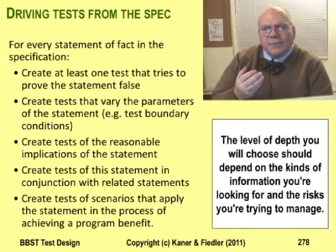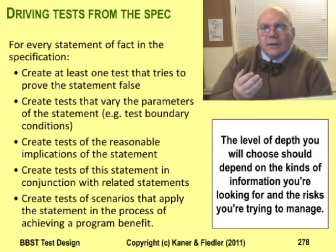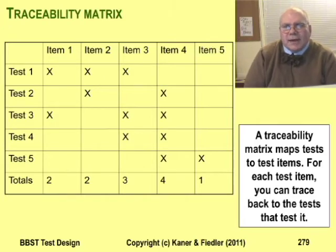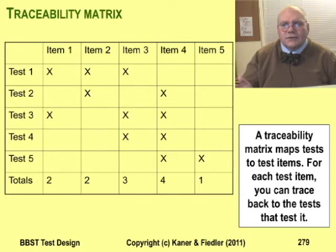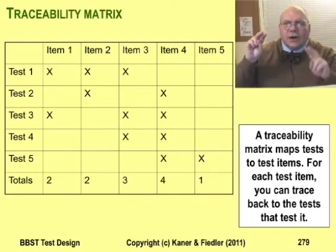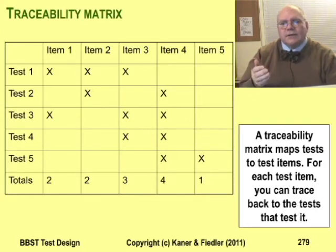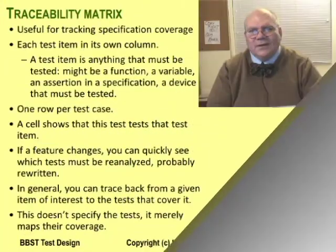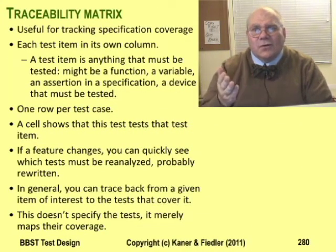For example, what happens if you test with boundary conditions? What happens if you have tasks that approximate real-life complexity — how people have really used the product? Will the spec statement still be true under those circumstances? A traceability matrix is a common tool for tracking spec-based tests. You can use a traceability matrix to map tests to anything, so it's more general than a spec-based test chart. Each item would be a different specification statement — so test one tests specification statements one, two, and three. Spec statement five is tested only by test five. The traceability matrix doesn't address the depth of testing at all; it only says you've touched the item a certain number of times.